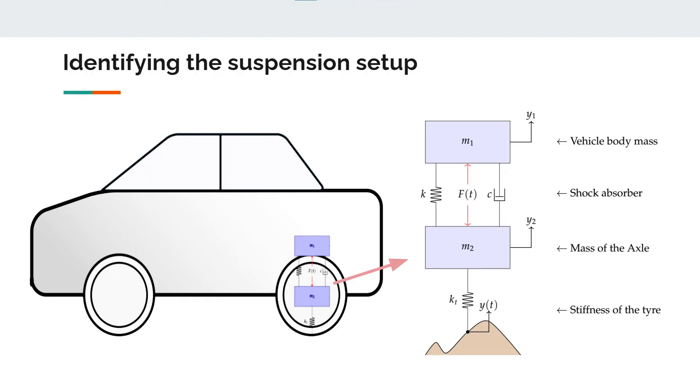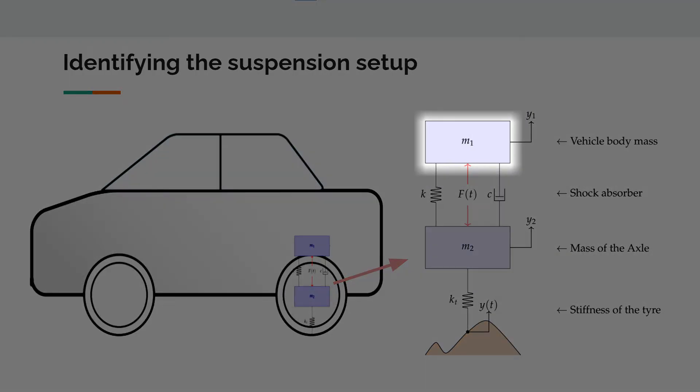This is the simplified suspension setup. This M1 mass represents the vehicle body mass, and this M2 mass represents the mass of the axle.